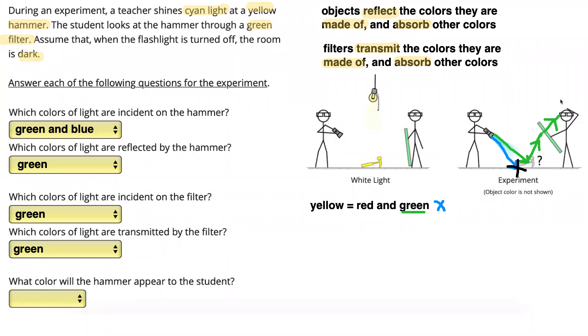Finally, what color will the hammer appear? The hammer is going to appear the color of the light that enters the student's eyes. The only light that makes it all the way to the student's eyes is green light. So the hammer will eventually look green when the student looks at it through the green filter with the teacher shining the cyan light on it.